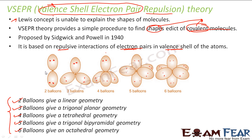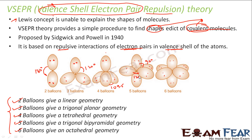For the linear geometry, the bond angle is generally 180°. For trigonal planar, the angle is 120°. In tetrahedral, the angle is 109.5°. In trigonal bipyramidal, the equatorial angles are 120° and the axial angles are 90°. In octahedral, all angles are 90°.